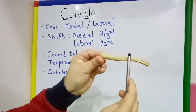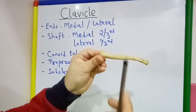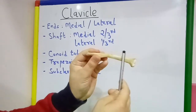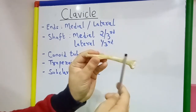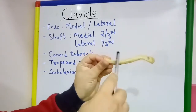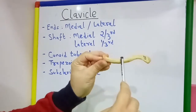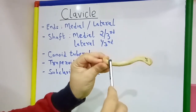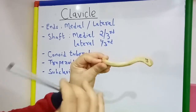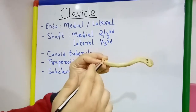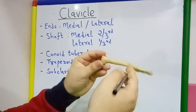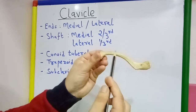The anterior surface is convex forward, the posterior surface is concave backwards, then there is a superior surface — and at the medial end of the superior surface the area is rough — and there is an inferior surface.